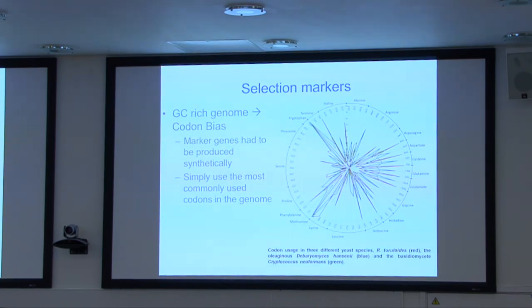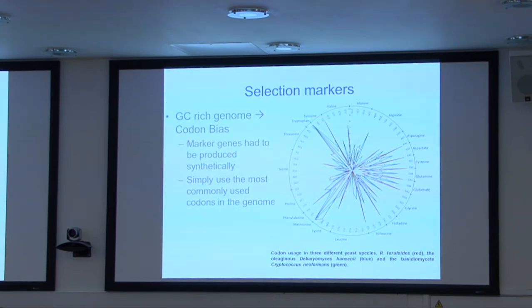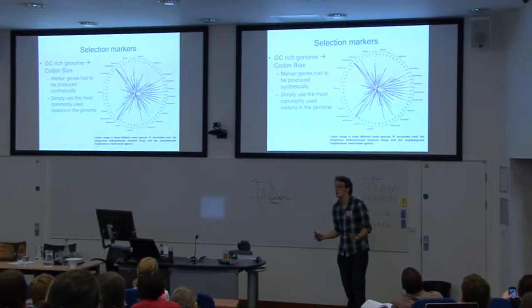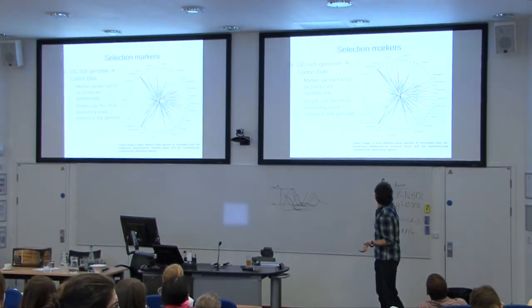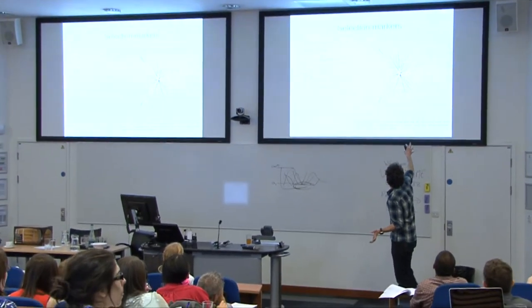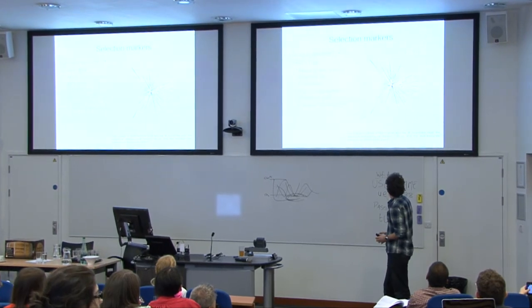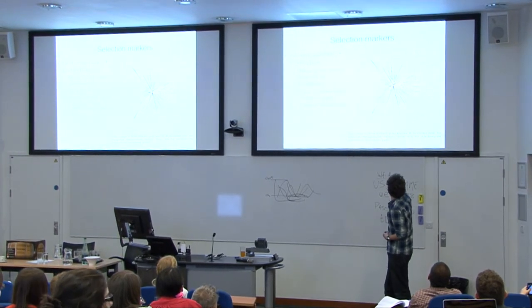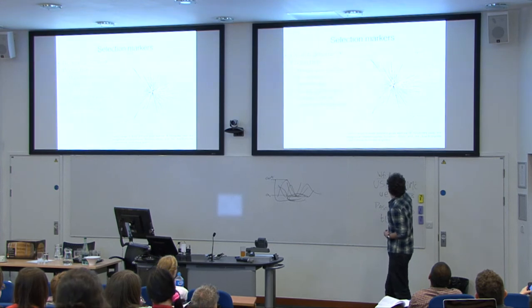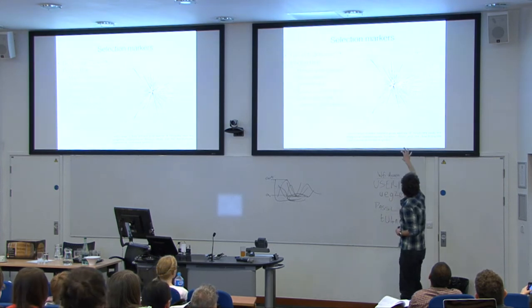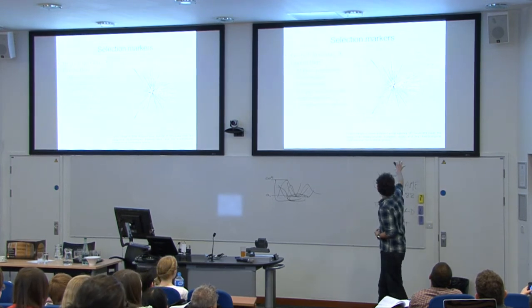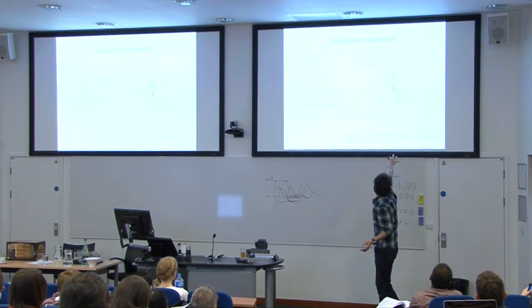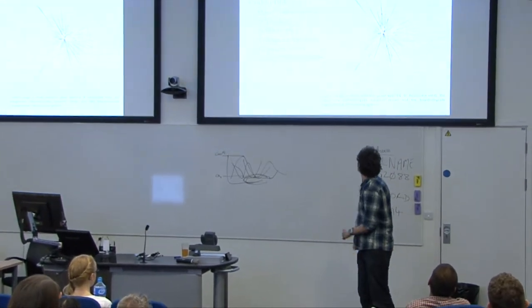One of the problems with working with Rhodosporidium, however, is that it has a very GC-rich genome, and this is represented in the codon usage of the genes in this organism. This chart here shows comparative codon usage: Rhodosporidium in red, Kluyveromyces hansenii in blue, and Cryptococcus neoformans in green. Rhodosporidium toruloides has extremely skewed codon usage, with almost exclusive use of G's and C's at the wobble position.